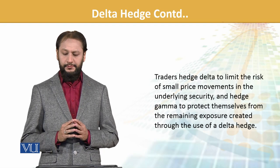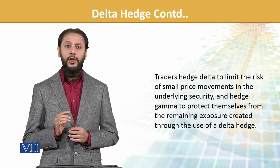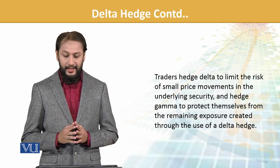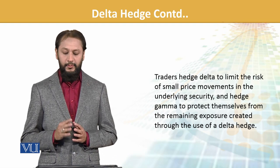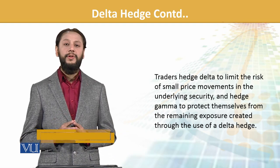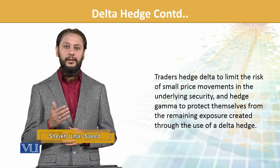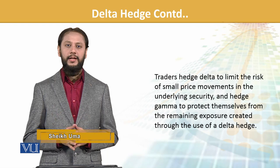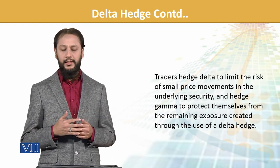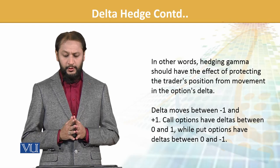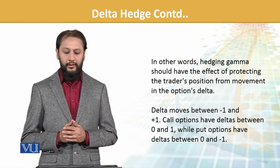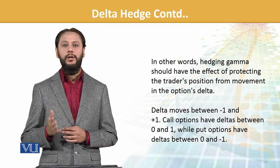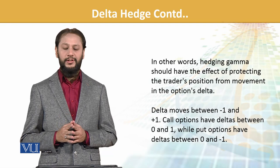Creators hedge delta to limit the risk of small price movement in the underlying security, اس میں جو change آیا اس کو capture کرنے کے لیے. And hedge gamma to protect themselves from remaining exposure created through use of delta hedge — کیوں کہ delta in itself میں change آ سکتی ہے تو that is being captured through gamma. In other words, hedging gamma should have the effect of protecting the trader's position from movement in the option's delta.